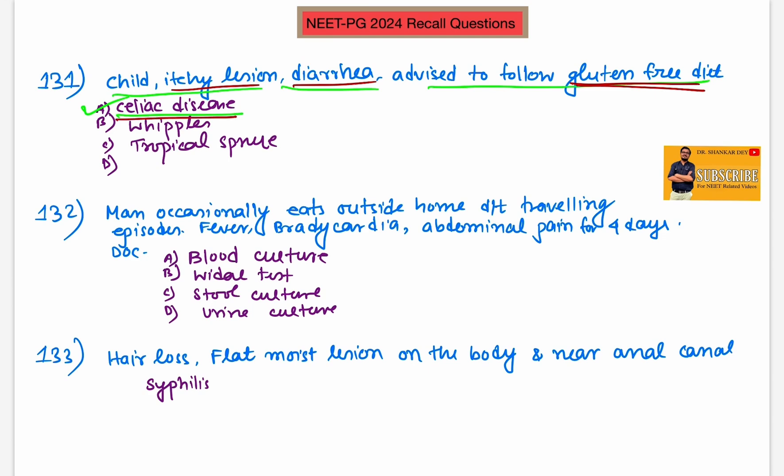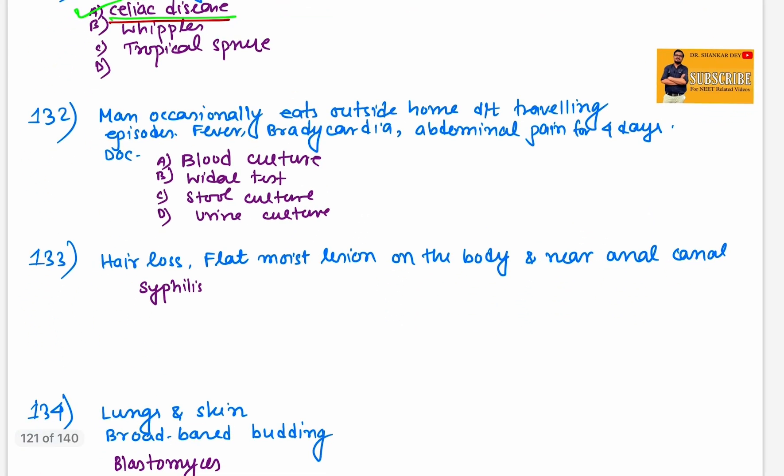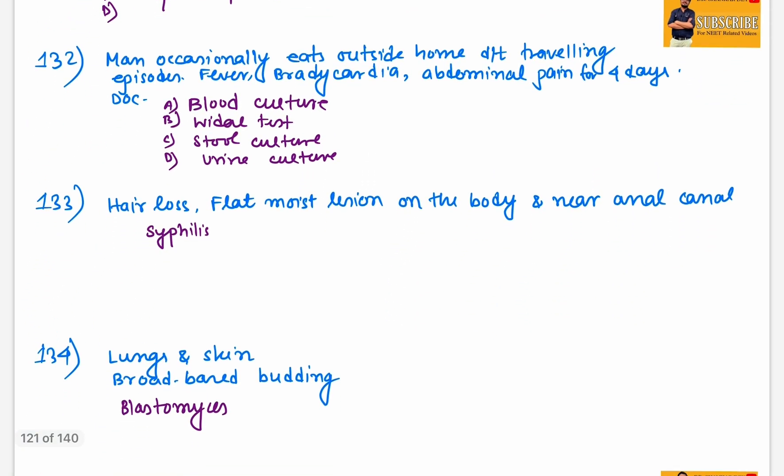Man occasionally eats outside, traveling episode, now complaining of fever, bradycardia, abdominal cramps. This is probably enteric fever because there is fever, bradycardia, abdominal pain. Now it is day 4, and the diagnosis of choice will be blood culture. The mnemonic BASU: first week blood culture, second week antibody, third week stool culture, fourth week urine culture.